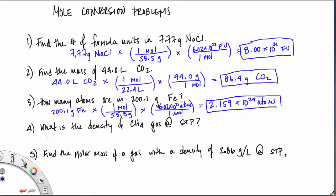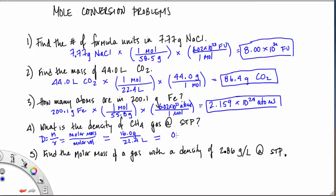In problem number four, we want to find the density of methane gas at standard temperature and pressure. Density is mass divided by volume, which in our case is molar mass divided by molar volume at STP. The molar mass of CH₄ is 16.0 grams — 12 grams for carbon plus 4 hydrogens. Dividing by the molar volume of 22.4 liters gives 0.714 grams per liter.